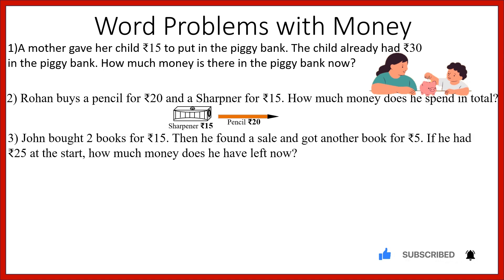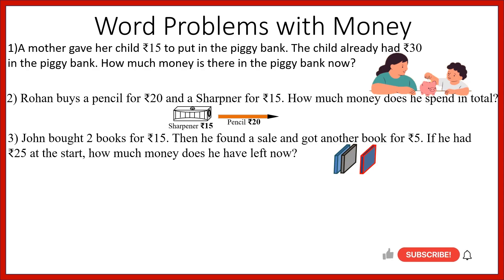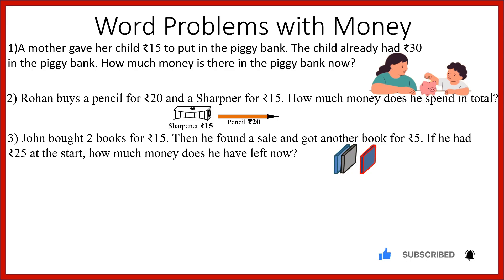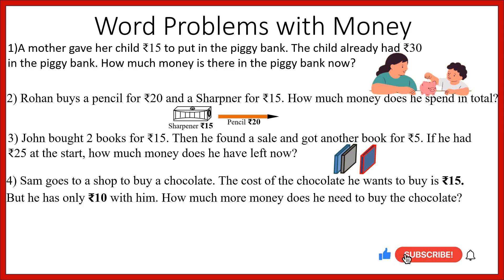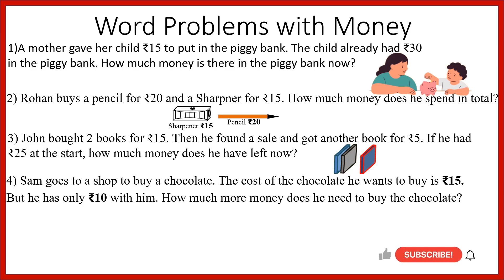John bought two books for rupees 15, then he found a sale and got another book for rupees 5. If he had rupees 25 at the start, how much money does he have left now? You have to add 15 and 5, that is 20, and then subtract: 25 minus 20. Sam goes to a shop to buy a chocolate. The cost is rupees 15 but he has only rupees 10. How much more money does he need? You have to subtract.